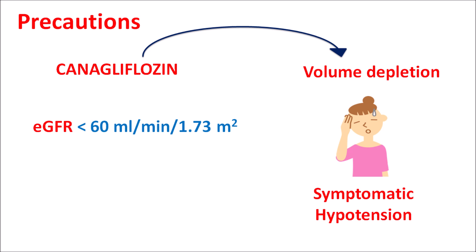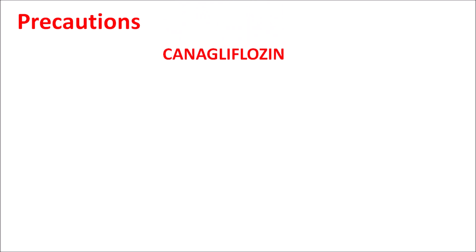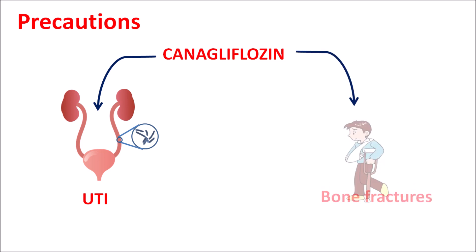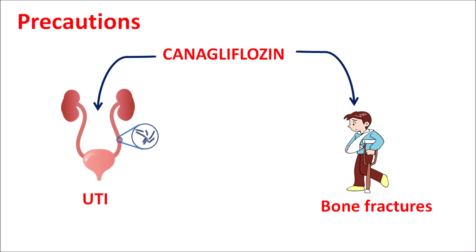Volume depletion is also more likely in patients taking loop diuretics when given along with canagliflozin. Another important precaution is that this drug increases glucose excretion through the renal tubules, which may increase the risk of urinary tract infections. When there is more glucose excretion, there is an increased risk of infections within the urinary tract. Finally, this drug can also increase the risk of bone fractures, so in patients with low bone mineral density, this drug should be used carefully.